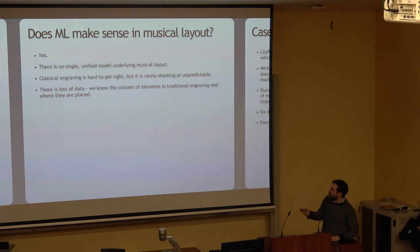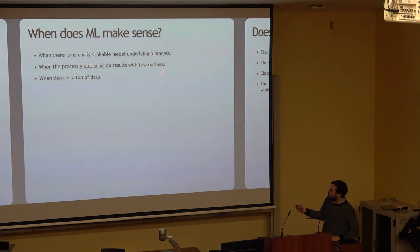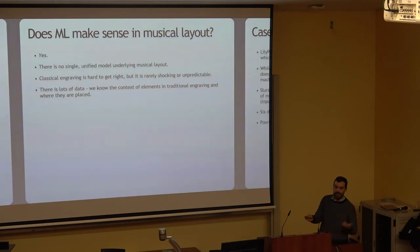So, does ML make sense in musical layout? Yes. First, there's no single unified model underlying musical layout, meaning that there's no easily graspable process to lay out a score. Not that I know, at least, and if there were, then 10 years of my computational life would have been down the drain. Then, classical engraving is really hard to get right, but it's rarely shocking or unpredictable. Usually when you get it right, it's totally unshocking and totally predictable, even though it's really hard. And then there's tons of data. Dominique was talking about this before, but we know the context of elements in traditional engraving, where they're placed, and as optical recognition gets better, we can even find more of it.